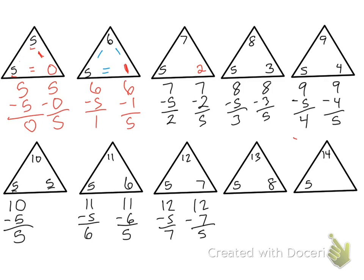5 plus 8 is 13, so 13 minus 5 is 8, and 13 minus 8 is 5. And then 5 plus 9 is 14, so 14 minus 5 is 9, and 14 minus 9 is 5.